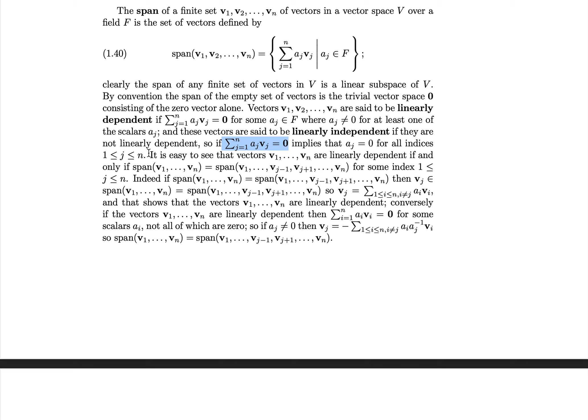You can check that vectors v1 to vn are linearly dependent if and only if the span of v1 to vn equals the span of v1 up to v_{j-1}, skipping v_j, then v_{j+1} up to vn for some index j between 1 and n. That is, you have linear dependence if you can remove one vector and the span is unchanged. Indeed, if these two spans are equal, then v_j is an element of the span of the remaining vectors, so v_j can be written as a non-zero linear combination of the other v_i's, and you can rearrange that to create a sum with non-zero coefficients.